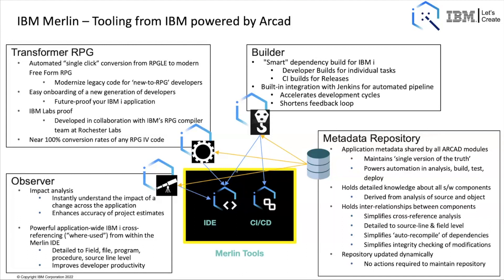The big thing is: if you make a change to an object, all of the tooling automatically realizes that. Builder knows about it and knows which relationships to build. Observer knows about it and knows which objects have been affected and where the 'where used' information is. All of this is directly integrated both within the IDE — you can right-click on an element and see impact analysis on a constant, a field, or a file — and also in the CICD process. So if you push an object change, a CICD build is triggered automatically through Jenkins via a Git hook, so all related objects are automatically built.